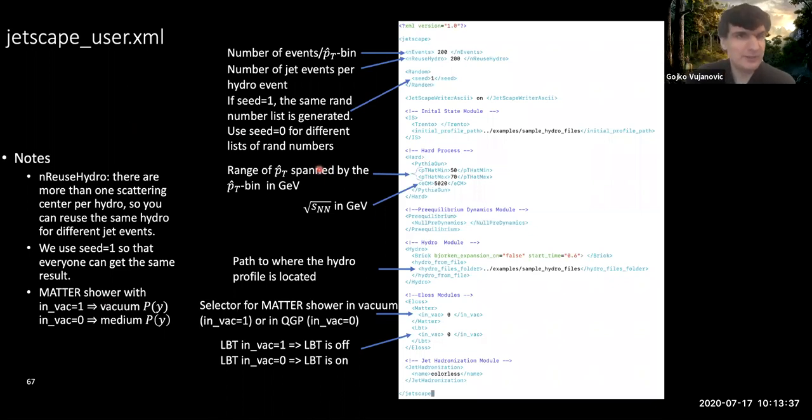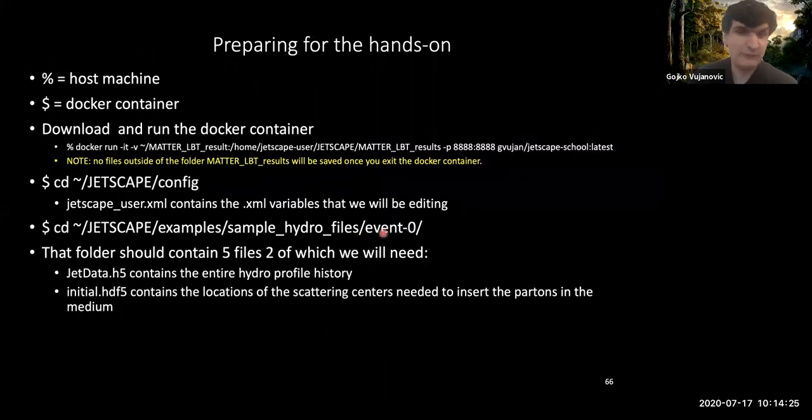Let me go over the jetscape_user.xml and a few of the things that we will be changing. This is the typical user xml that I've generated here. Events is telling you how many Pythia events that you want to essentially generate for pt-hat bin. This reuse hydro is telling that I'm going to run these 200 events using the same hydrodynamical profile. If you reduce this number to something smaller, then you would have to have the associated number of hydro. If I said reuse hydro is 20, I would need to have 10 hydro profiles that I can feed into the framework.